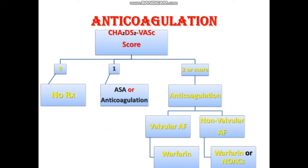Patients are then divided into valvular and non-valvular atrial fibrillation. Valvular causes include rheumatic heart disease and patients with valve prosthesis or repair. In these cases, the only anticoagulation option is warfarin (Coumadin) with a target INR of 2 to 3. For non-valvular atrial fibrillation — caused by hyperthyroidism and other causes — we can use either warfarin or novel oral anticoagulants (NOACs).